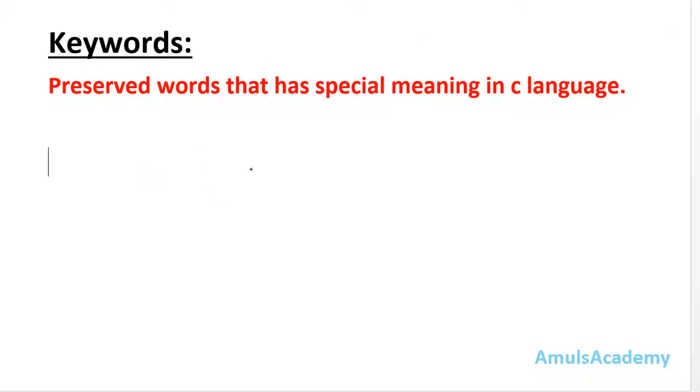If you use the keywords as the variable, for example for is a keyword right, so I will use this as a variable and I will try to assign some value to this. So at that time what will happen is here you are trying to change the meaning of this word.